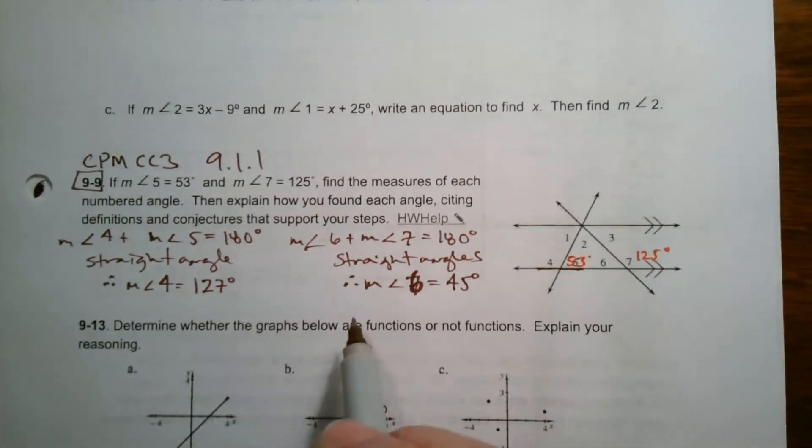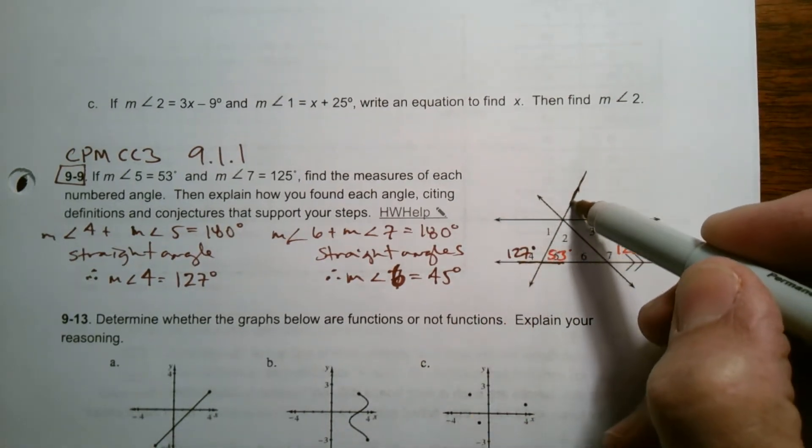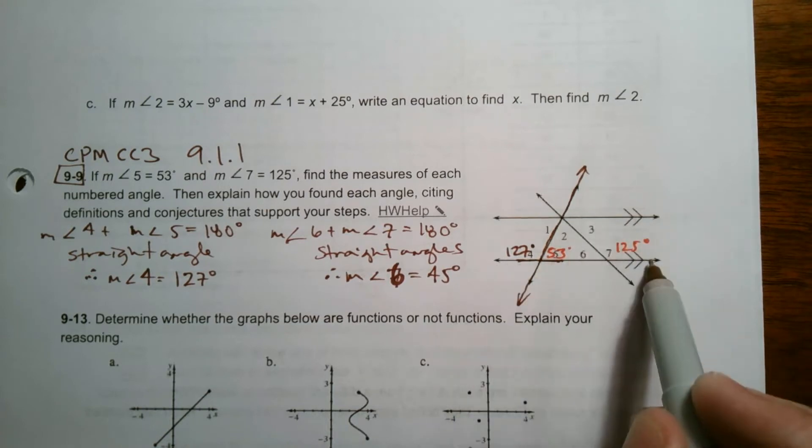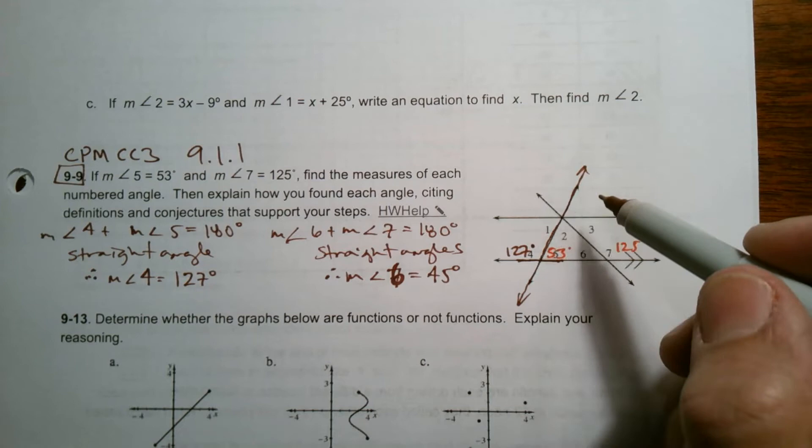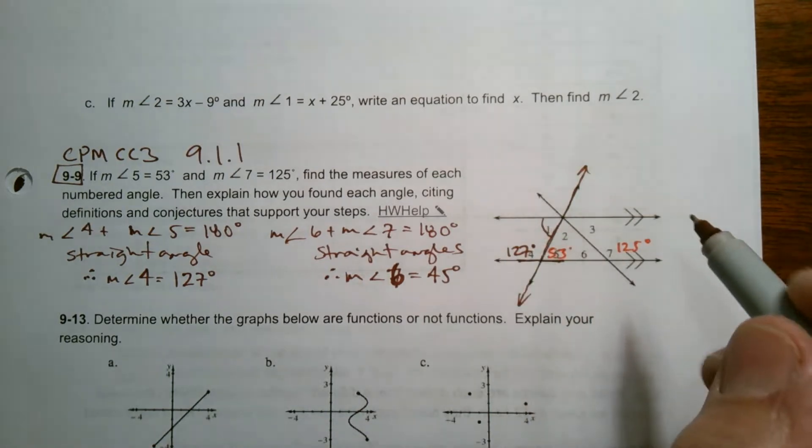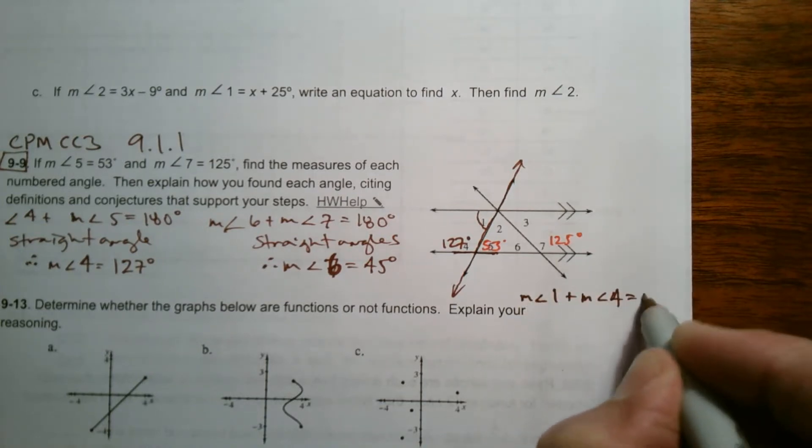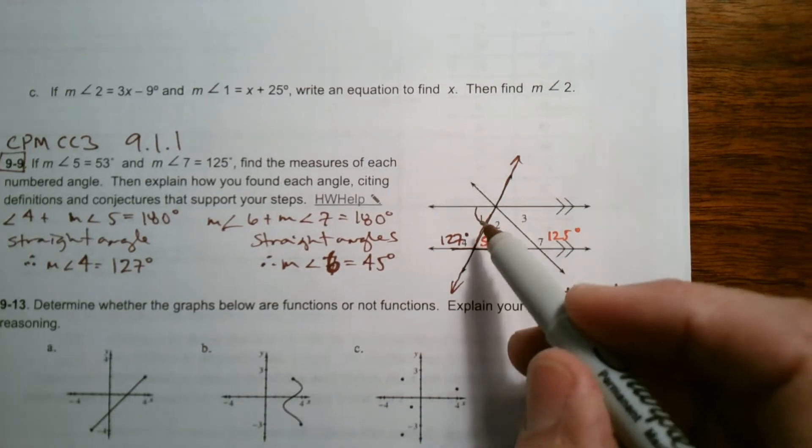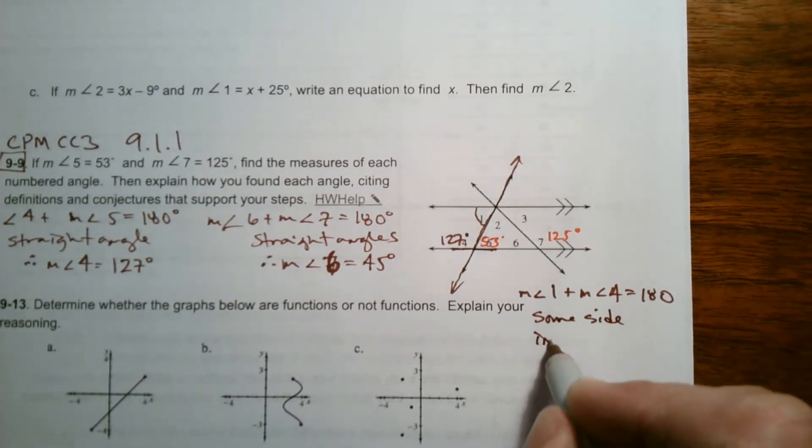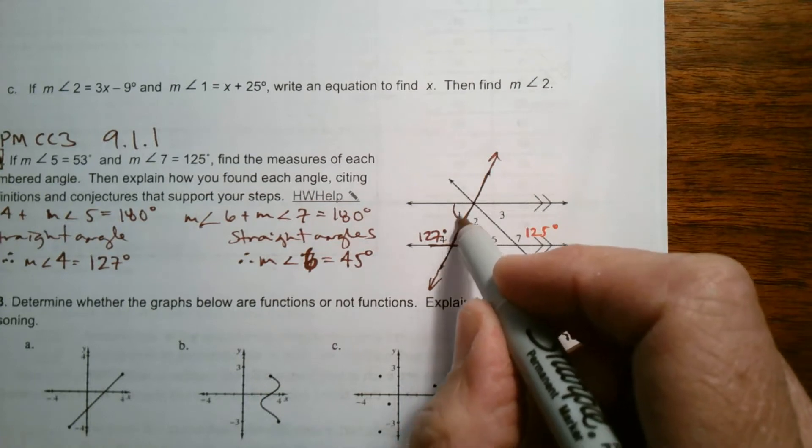Now, I'm going to continue on, because now once I know that this is 127, we see this line here, that is a transversal, right? Because it cuts through these two parallel lines. And we also can see that if that's a transversal, we have this angle here plus angle 4, so angle 1 and angle 4. The measure of angle 1 plus the measure of angle 4 is also going to equal 180, because these are same side interior angles.